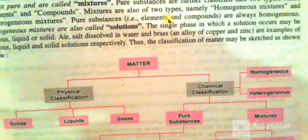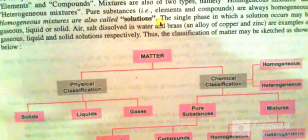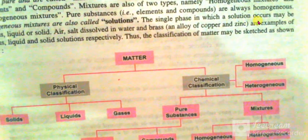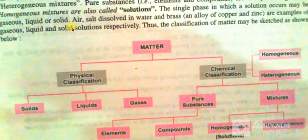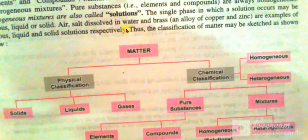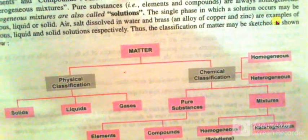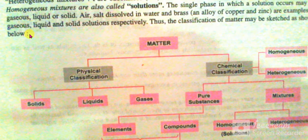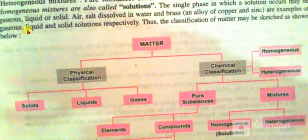Pure substances, such as elements and compounds, are always homogeneous. Homogeneous mixtures are also called solutions. The single phase in which a solution occurs may be gaseous, liquid, or solid. Air, salt dissolved in water, and brass — an alloy of copper and zinc — are examples of gaseous, liquid, and solid solutions, respectively.